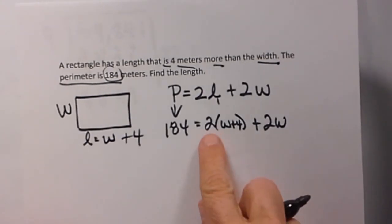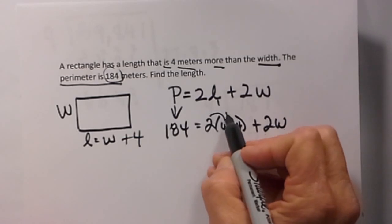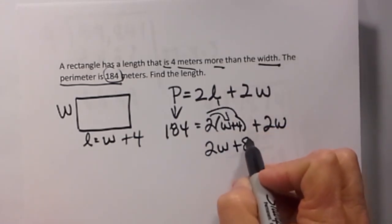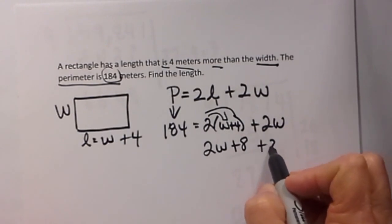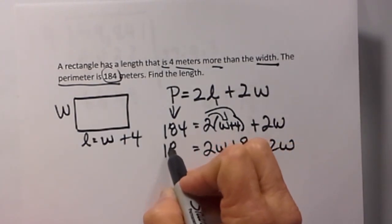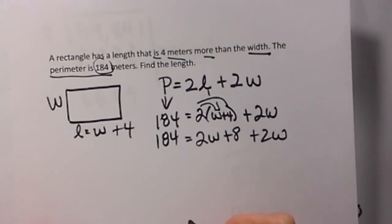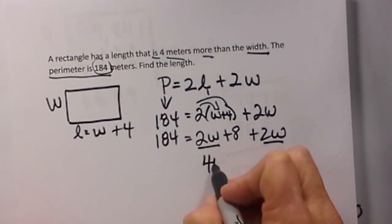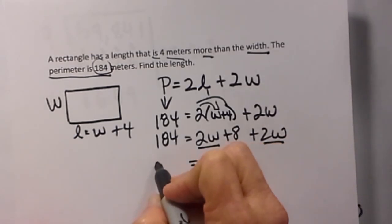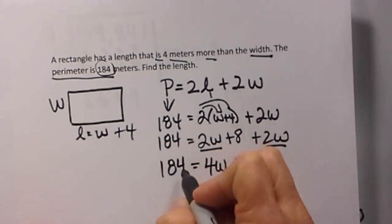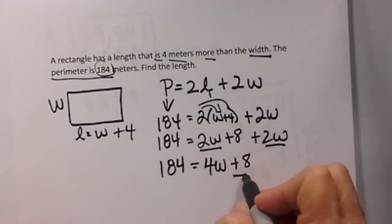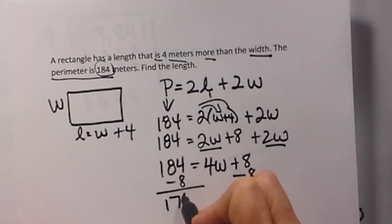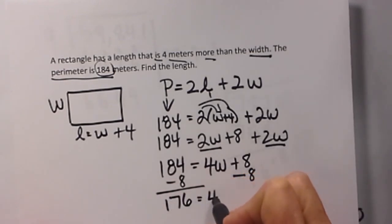So now let's put it together and distribute our 2 in. So when I distribute my 2 in I am going to get 2w plus 8. Bring down the plus 2w and bring down the 184. Now let's add our like terms. So we have a 2w and a 2w. That makes it 4w plus 8 is equal to 184. Now we need to get this w by itself. So let's subtract 8.